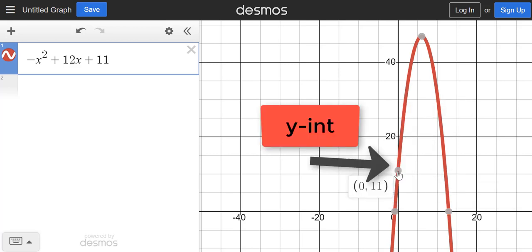This one right here, that's your y-intercept. If you notice over here, your constant, 11, that is the same value as the y-coordinate right here. Because if you put 0 in for x, of course, you will get 11 in this example.